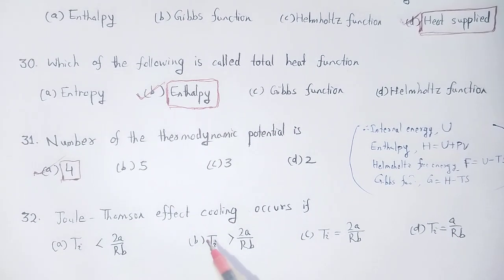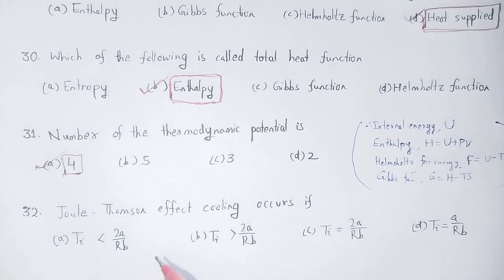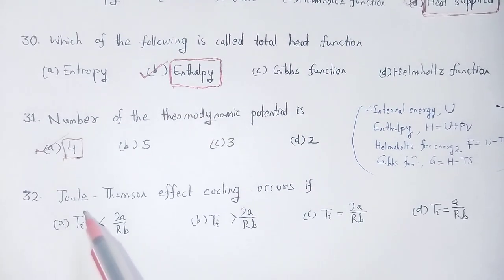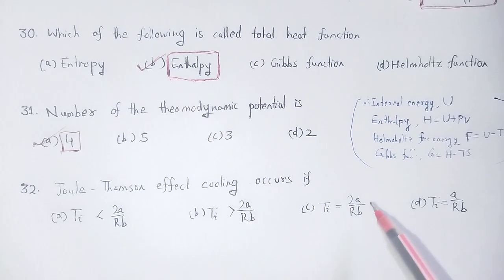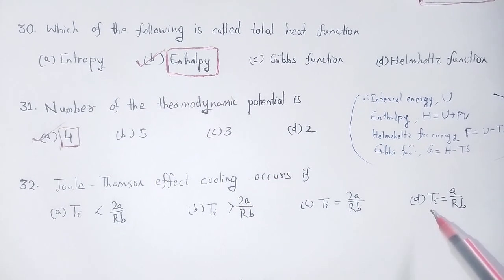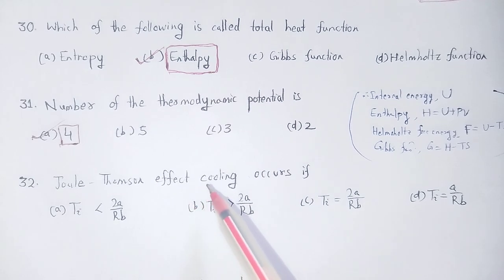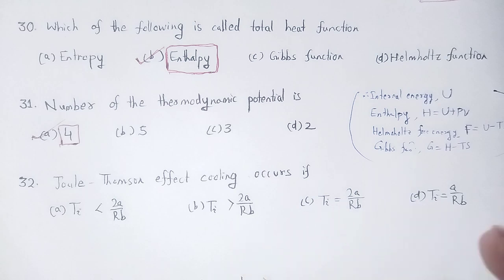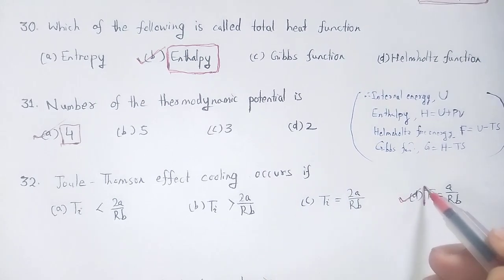Joule-Thomson effect: cooling occurs in the Joule-Thomson effect when the temperature is less than the inversion temperature, which is 2a divided by Rb. Option number D is correct.